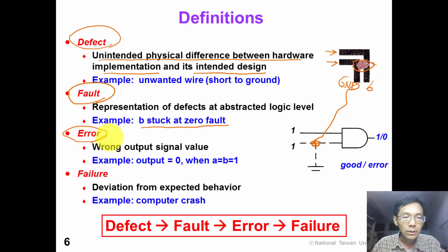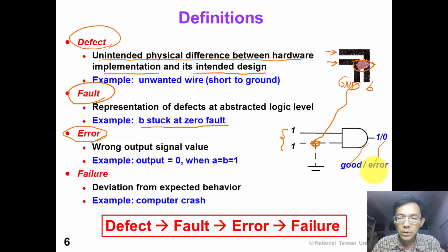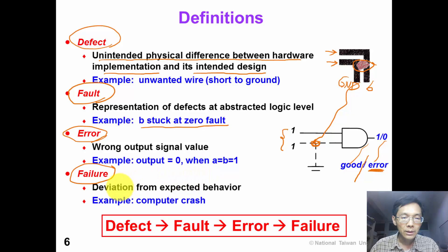The next definition: an error is a wrong output signal value. For example, for this AND gate, if we apply input 1-1 to test the gate, the good output is 1, but the erroneous output is 0. So this is what we call an error. In this lecture, we will use the notation of separating the good value and the erroneous value by a slash. The next definition is a failure. A failure means deviation from expected behavior. For example, suppose we have this defect in our computer and our computer will crash online. So this is what we call a failure.